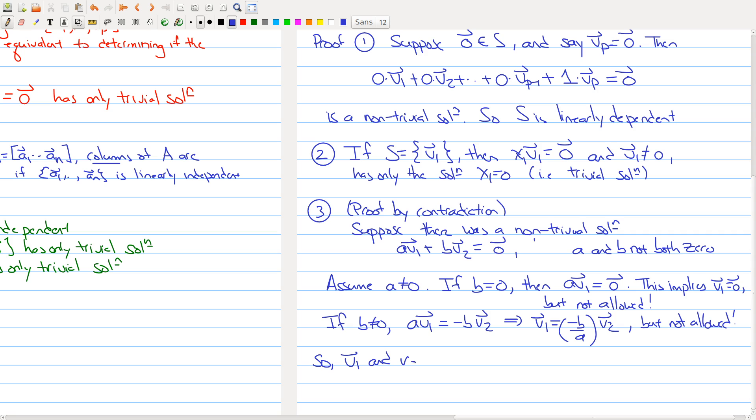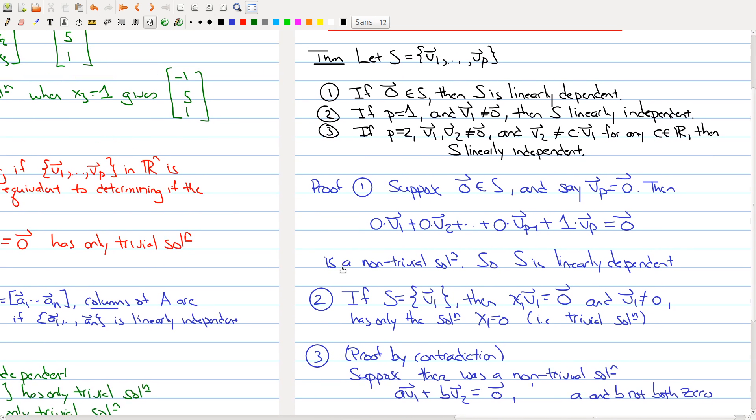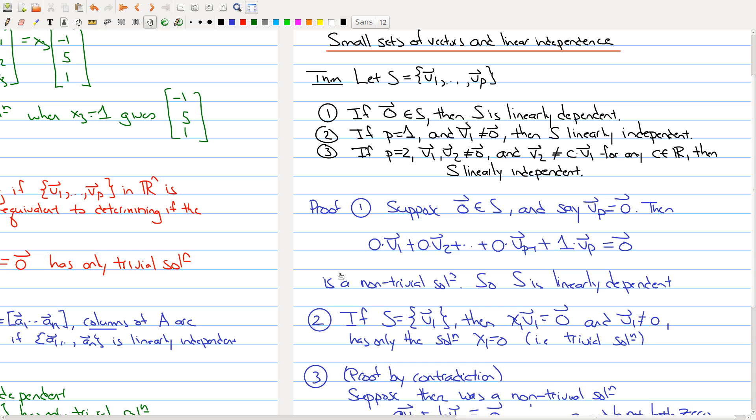So V₁ and V₂ must be linearly independent. You could look at the proof a bit and try to convince yourself of why it's true. The key thing here is this particular theorem tells us immediately what's happening with small sets of vectors. If you have one or two vectors in there, you can immediately decide what's happening. This ends our second part. Into the next part, I'm going to talk a little bit about the geometry of what linear independence means. I'll see you in the next part.